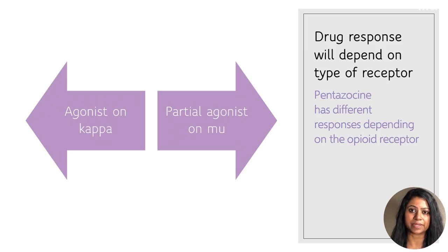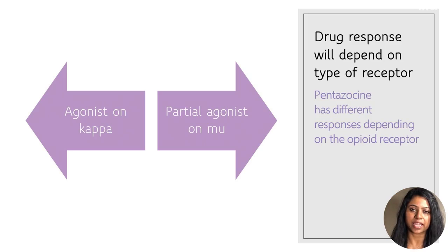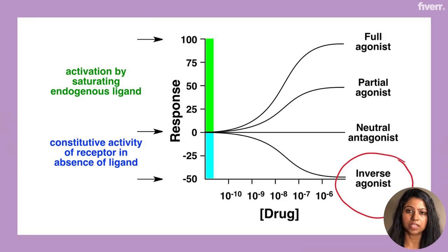An example is pentazocine. Pentazocine is a full agonist at the kappa receptor, but it is a partial agonist at the mu receptor. Now let's look at inverse agonists.